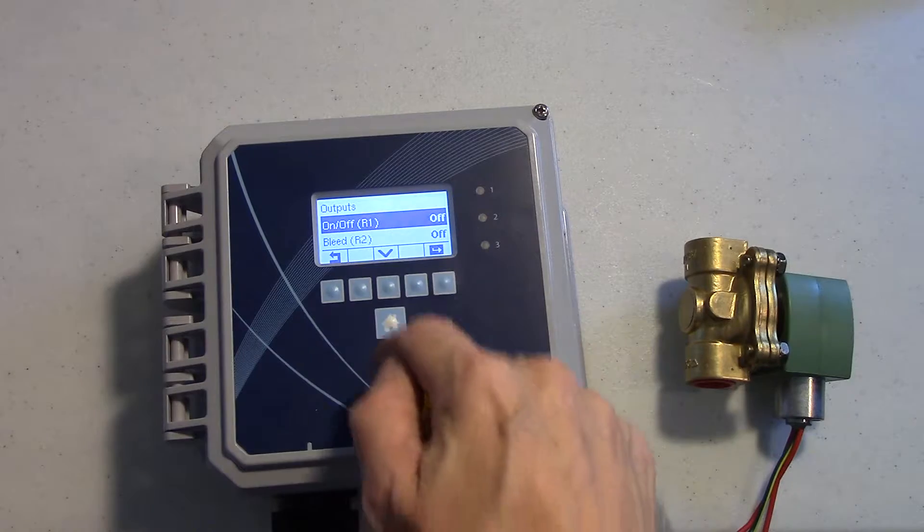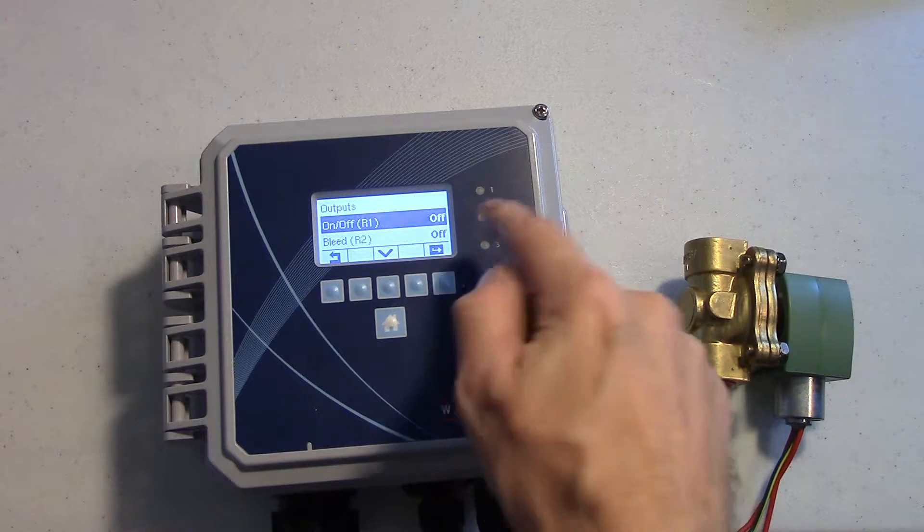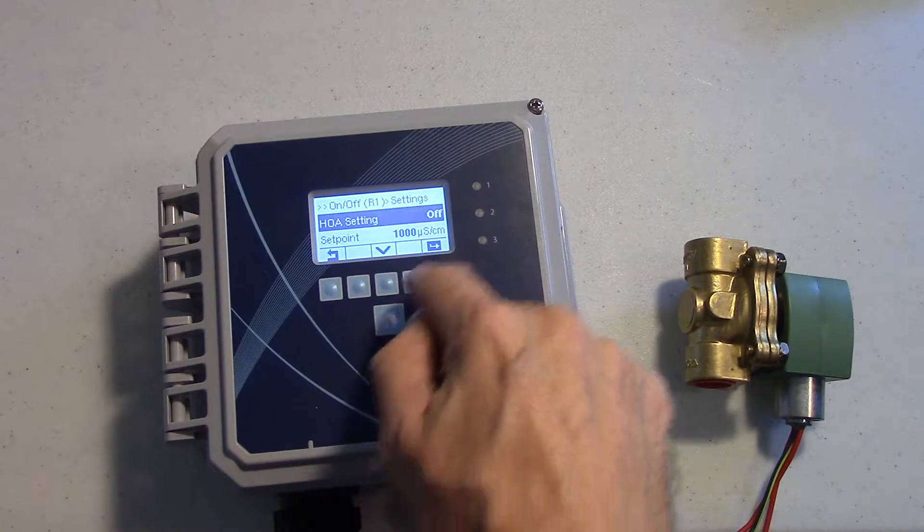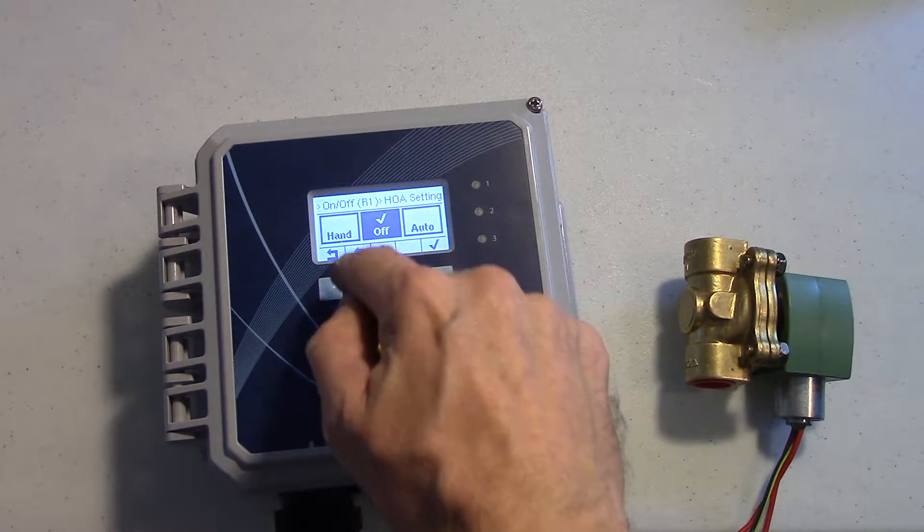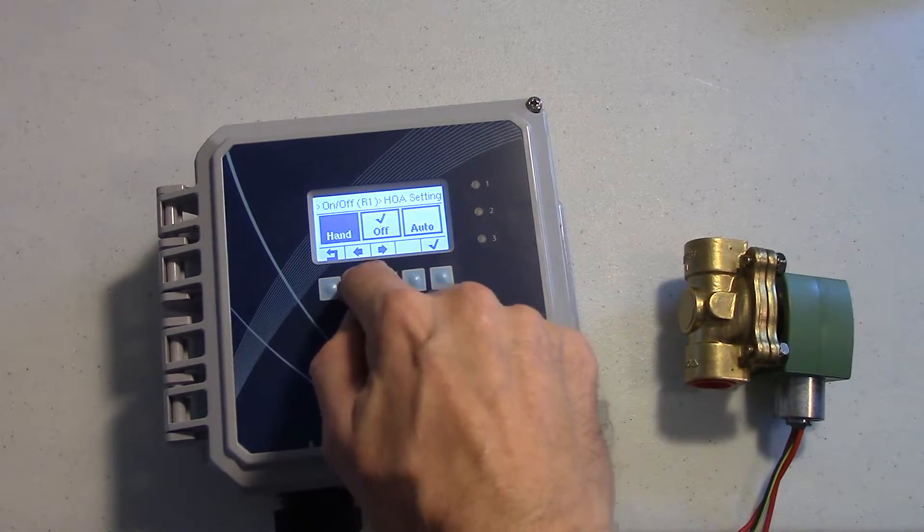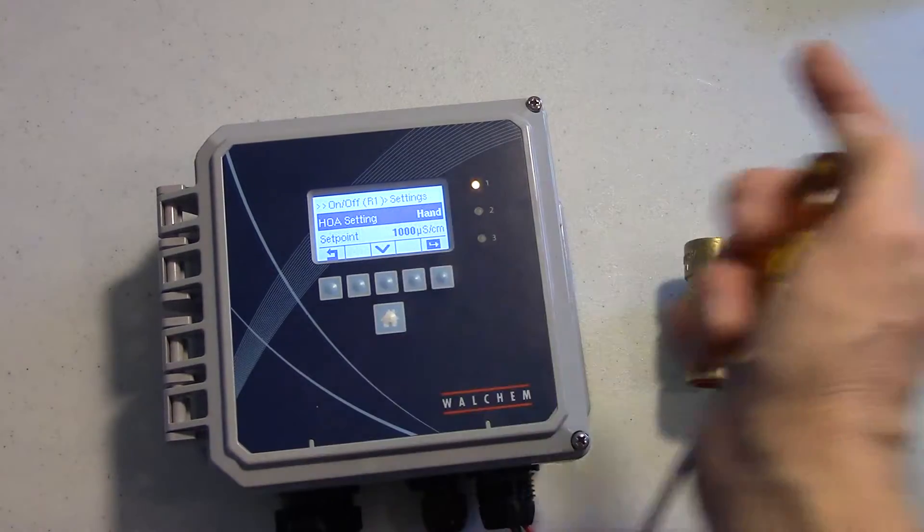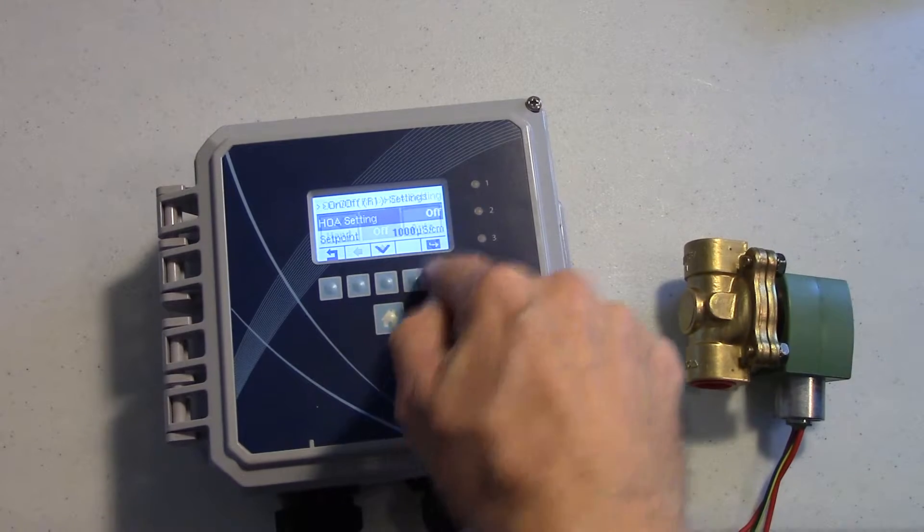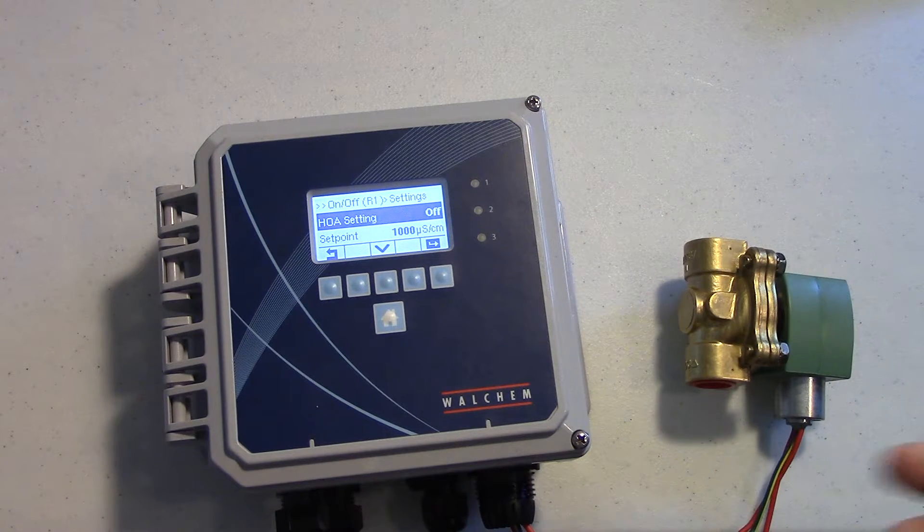So to get to the relays the down arrow, I've wired it to relay one, enter settings and I'm going to put it into hand. Hit the check, comes right on. Put it back off, turns off, everything's wired correctly.